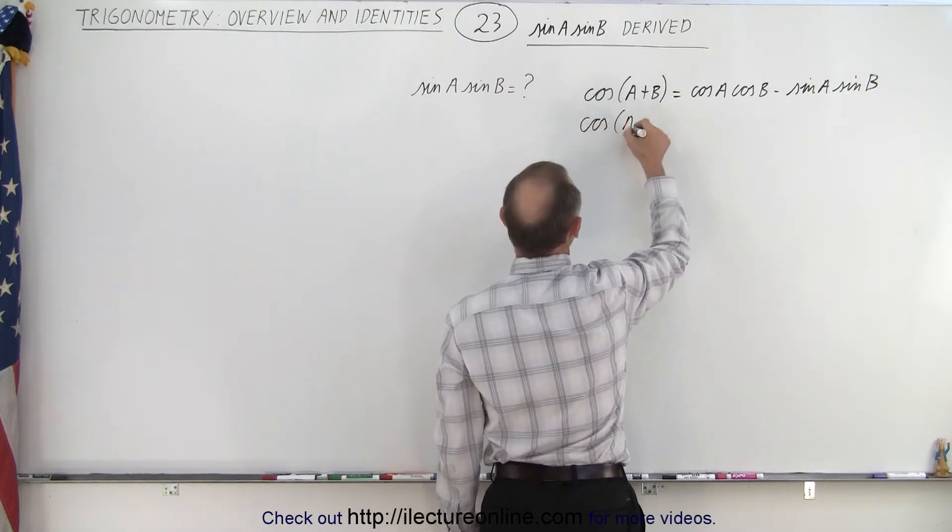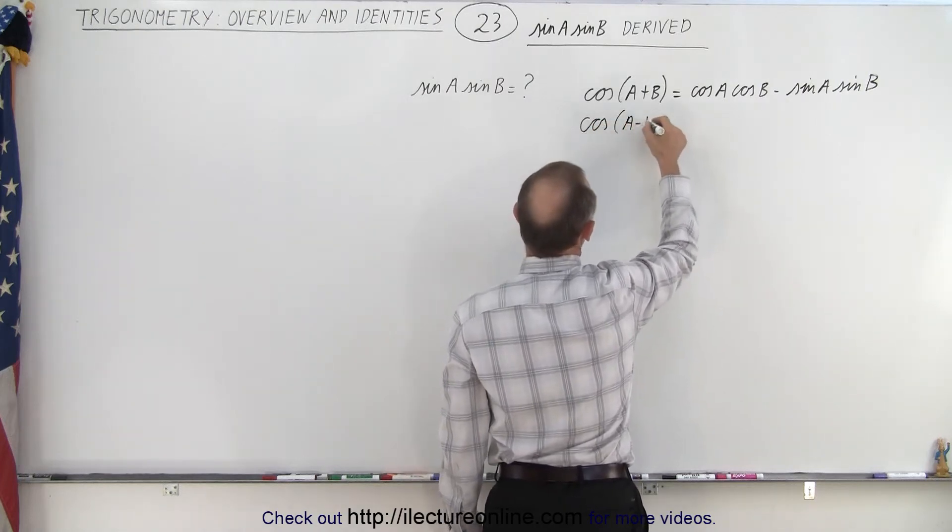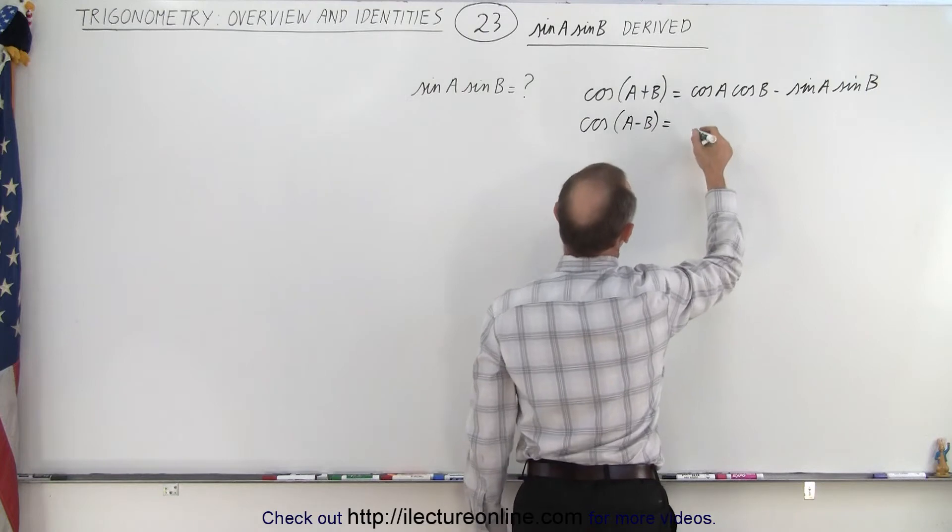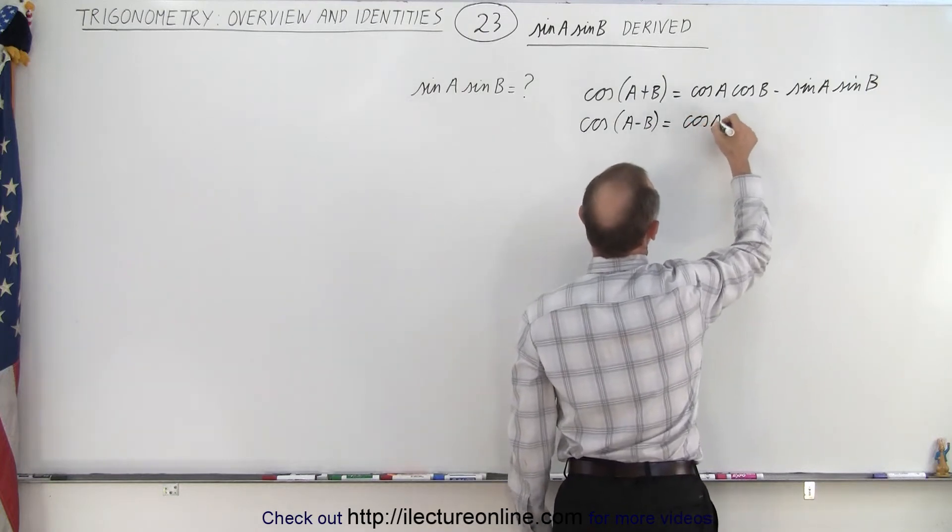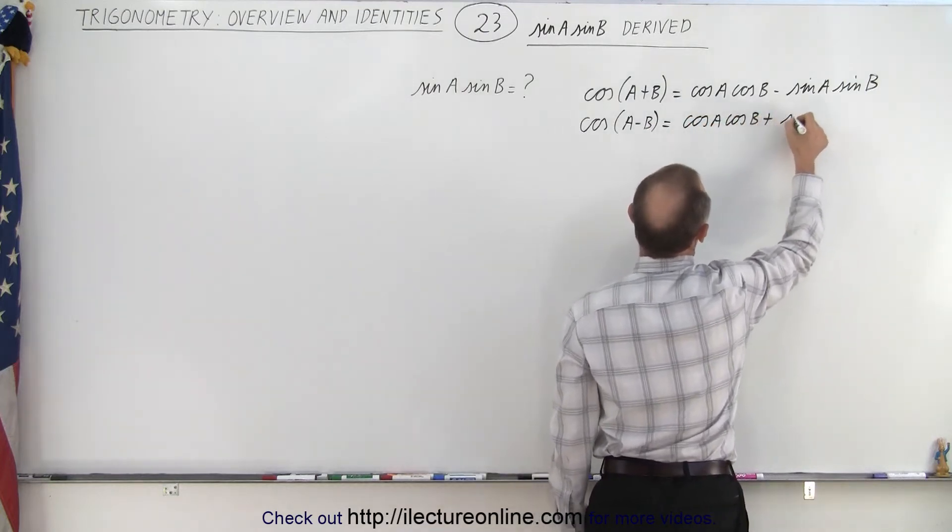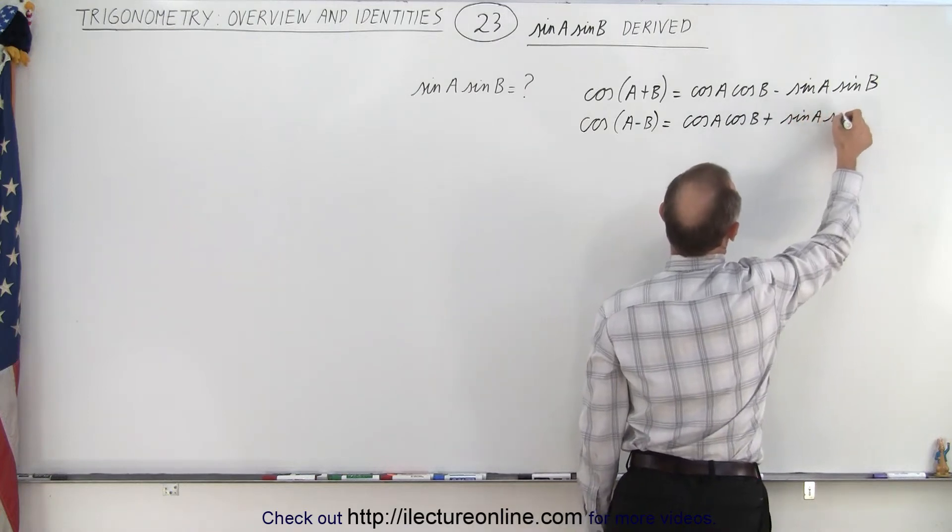we write the cosine of a minus b, and this would be equal to cosine of a times cosine of b plus sine of a times sine of b.